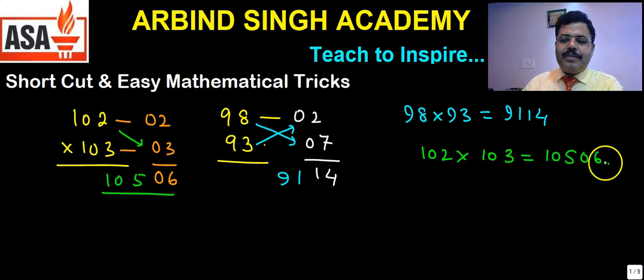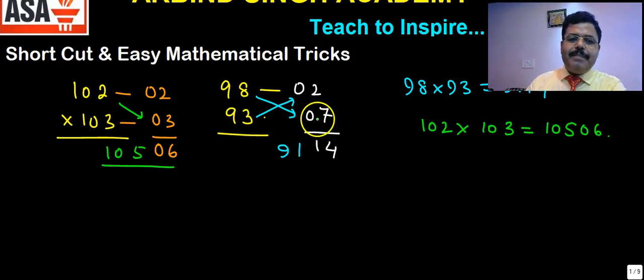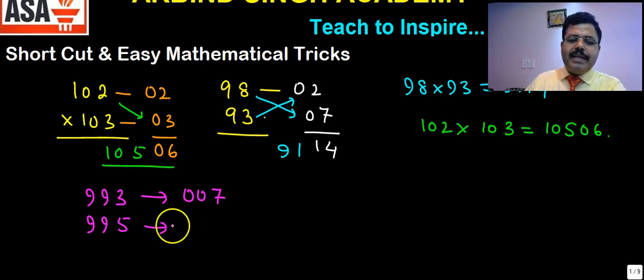Now what will happen if the number is bigger than this? Suppose number is like 993 and number is like 995. So this is the nearest multiple of 1000. You need to write 007, and here 1000 minus this is 005. Now product of that is 035. Again you need to subtract: 993 minus 5 is 988.